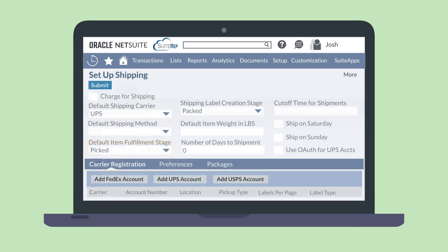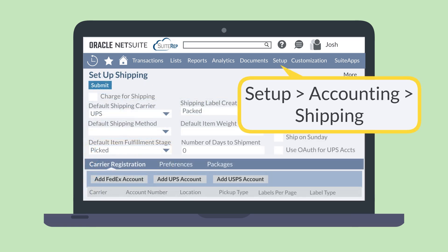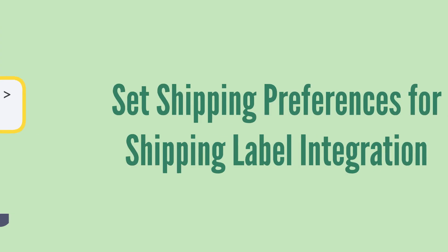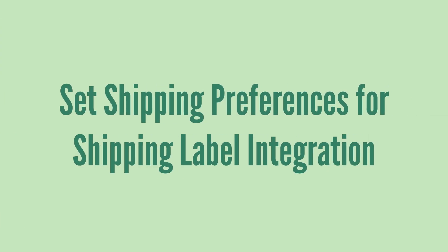Then, navigate to the Setup Shipping page: Setup > Accounting > Shipping. Let's take a look at the preferences and fields you need to configure on this page that are related specifically to the Shipping Label Integration feature.